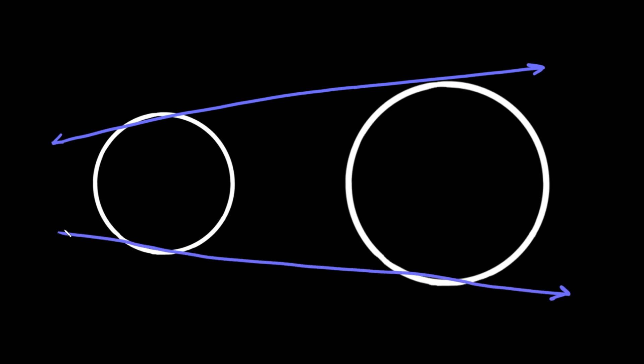Circles can intersect at no points, one point, or two points. In the case where the two circles are not touching and not intersecting, there are four common tangents — two on the outside, one up top and one along the bottom, and also two common tangents that run along the insides of the circles.